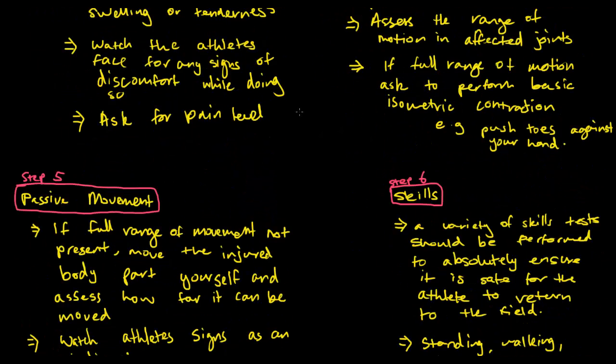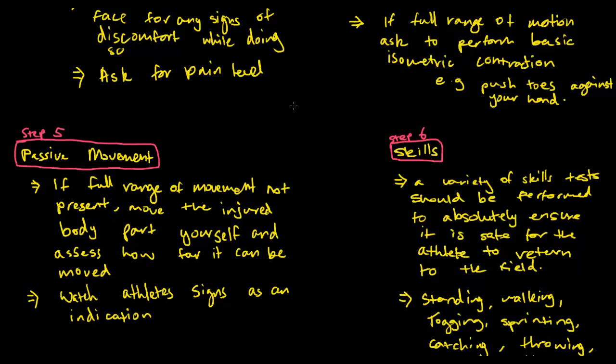Next, we have passive movement. Passive movement is when the athlete themselves doesn't move anything, but it's actually yourself who tries to move it. Most likely, you use passive movement when the athlete themselves says they can't move it. Passive movement is just another way to figure out how far they can actually move the injured area. If a full range of movement is not present from the previous test, we can move the injured part ourselves and assess how far it can be moved. While doing this, we can watch the athlete's face or the body language to see what type of reaction they have as we move it. If it's very painful, they'll scream or be very tensed, and that will give you an indication of how far you can actually move it without causing more pain.